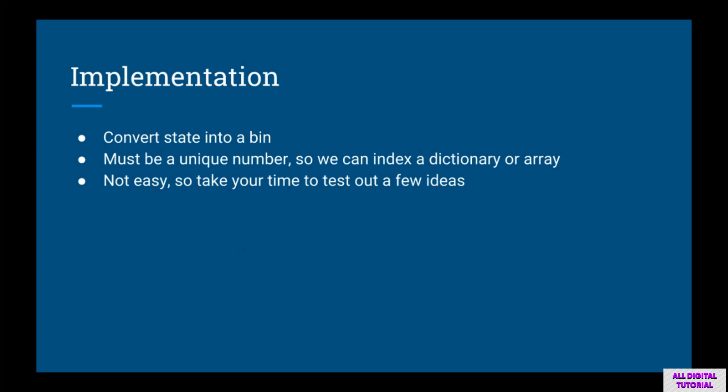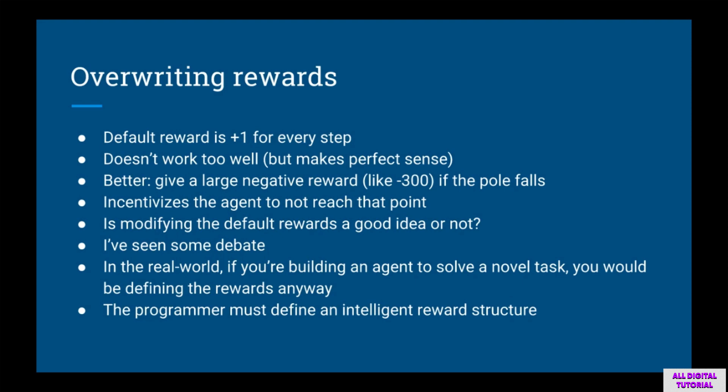Implementing this will be quite complex. You'll need to convert the state into a bin so you can use it to index a dictionary or an array. Also worth noting: the default reward for CartPole is plus one for every time step, but this doesn't work too well for Q-learning with bins. It works better if you give the agent a large negative reward, like minus 300, every time the episode ends. This incentivizes the agent to avoid reaching that point. Modifying rewards is generally okay — in the real world you'd be defining the rewards anyway.